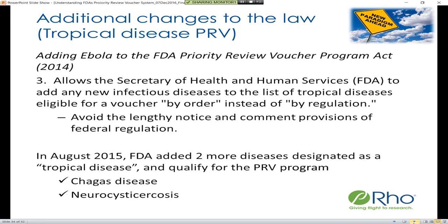In August 2015, the FDA exercised this new authority and added two new diseases to the qualifying list: Chagas disease and neurocysticercosis. Importantly, for the FDA to add any new diseases, it must be an infectious disease where there is no significant market in developed nations and it must disproportionately affect poor or marginalized populations.